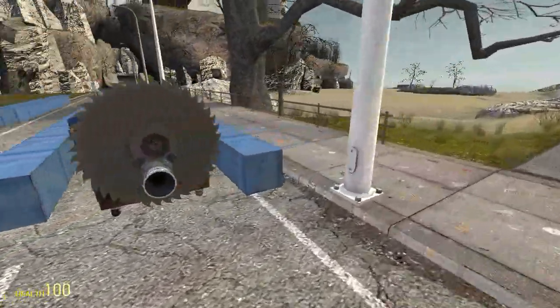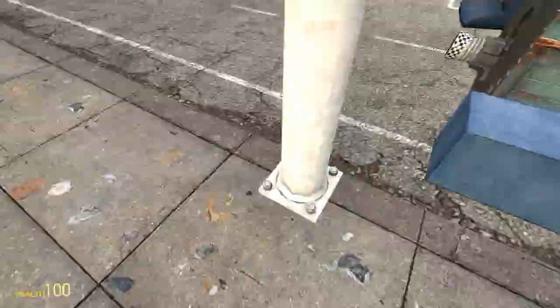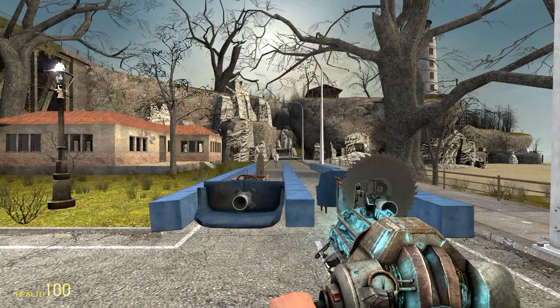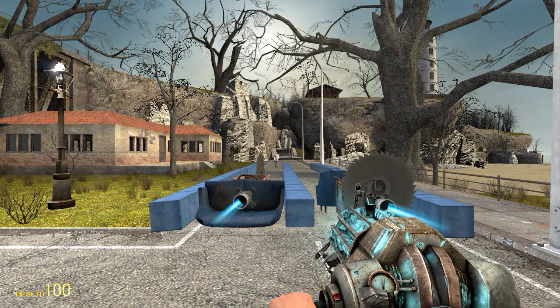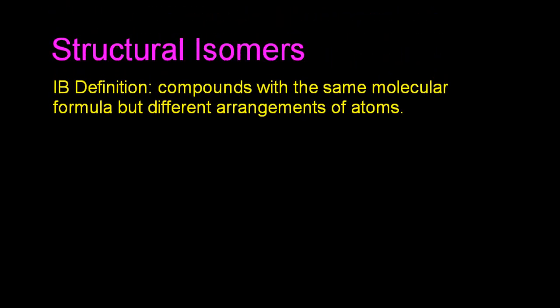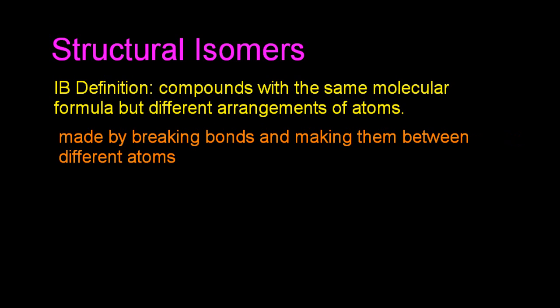And this is very similar to structural isomerism. You have to break apart and then rearrange the atoms in a molecule to get the isomers, the structural isomers. Structural isomers. Let's start with the IB definition. Compounds with the same molecular formula, but different arrangement of atoms. And that really means, in orange is my explanation, that they're made by breaking bonds and then making them between different atoms.